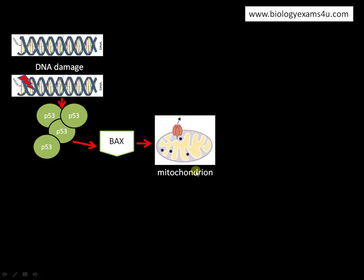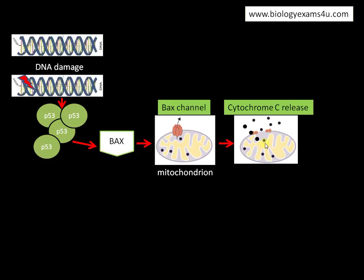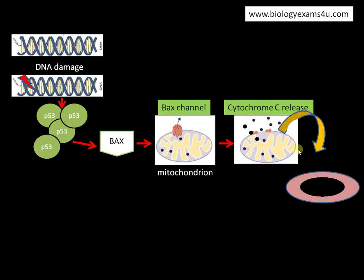There is a formation of a channel called the BAX channel, and the BAX channel will trigger the release of cytochrome C from the mitochondrion. Cytochrome C release will actually induce the production of caspase, the apoptotic executioner.